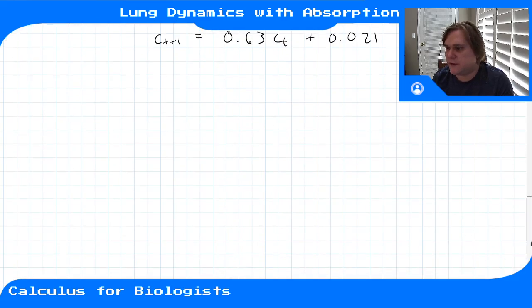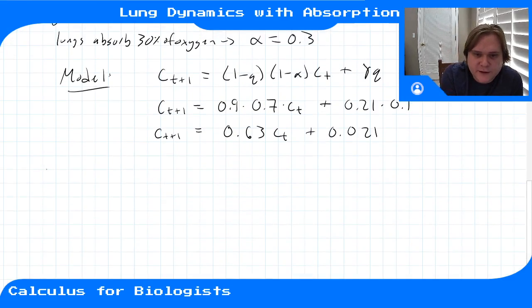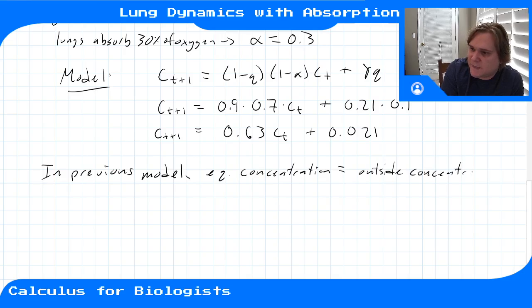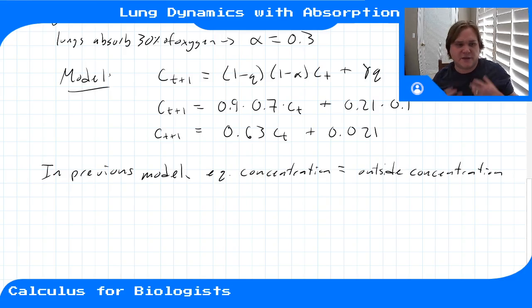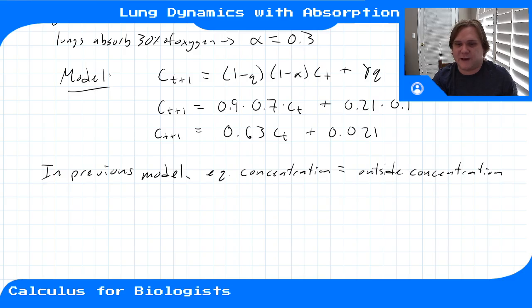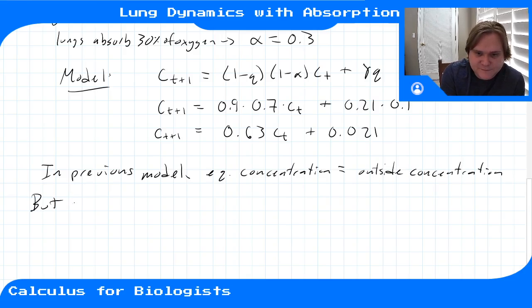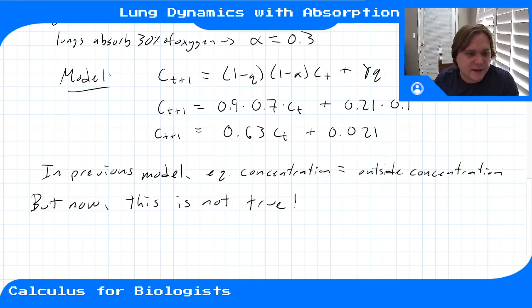Now we're interested in how the equilibrium is different. In the previous model without absorption, the equilibrium concentration was exactly equal to the outside concentration gamma. That made sense because concentration after a breath is a weighted average of the lung concentration and the outside concentration — at equilibrium, you're averaging the same number twice. But now with absorption, this will no longer be true, because the absorption term complicates what's going on.